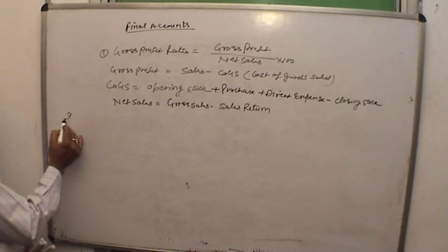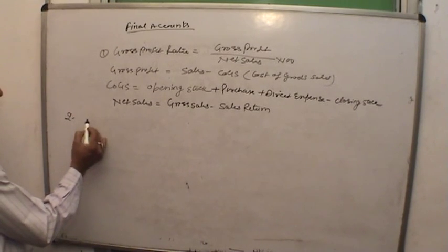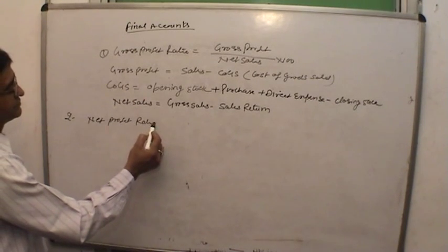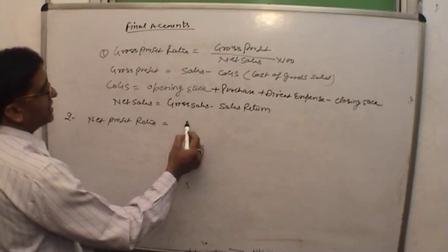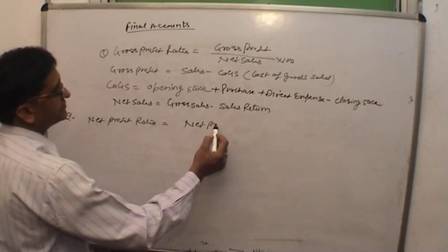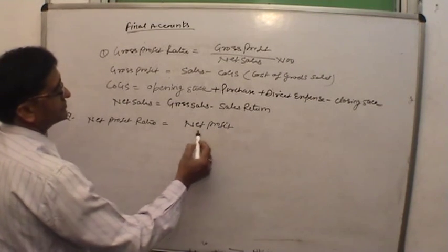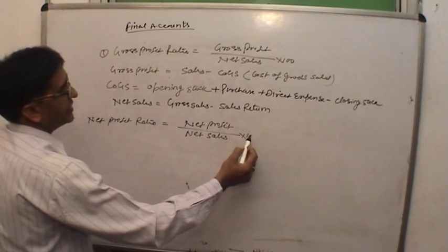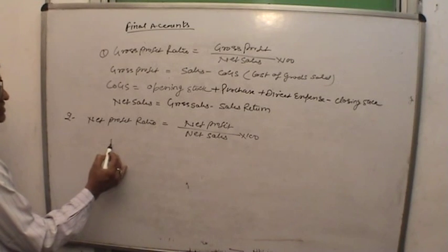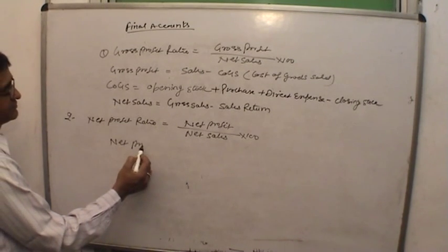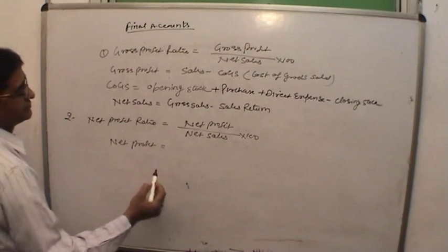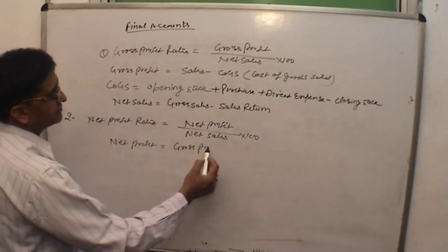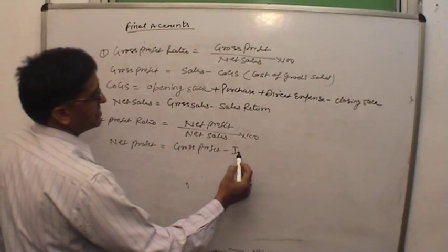Net profit ratio equals net profit divided by net sales, multiplied by 100. Net profit equals gross profit minus indirect expenses.